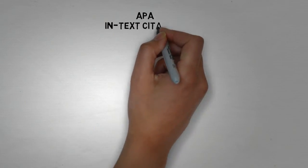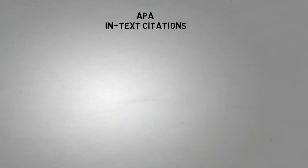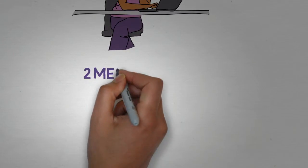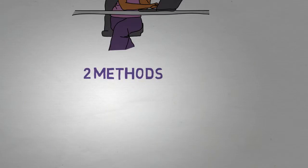Today we're going to discuss how to cite an author's information in your text using APA style. There are two general methods for introducing external material.